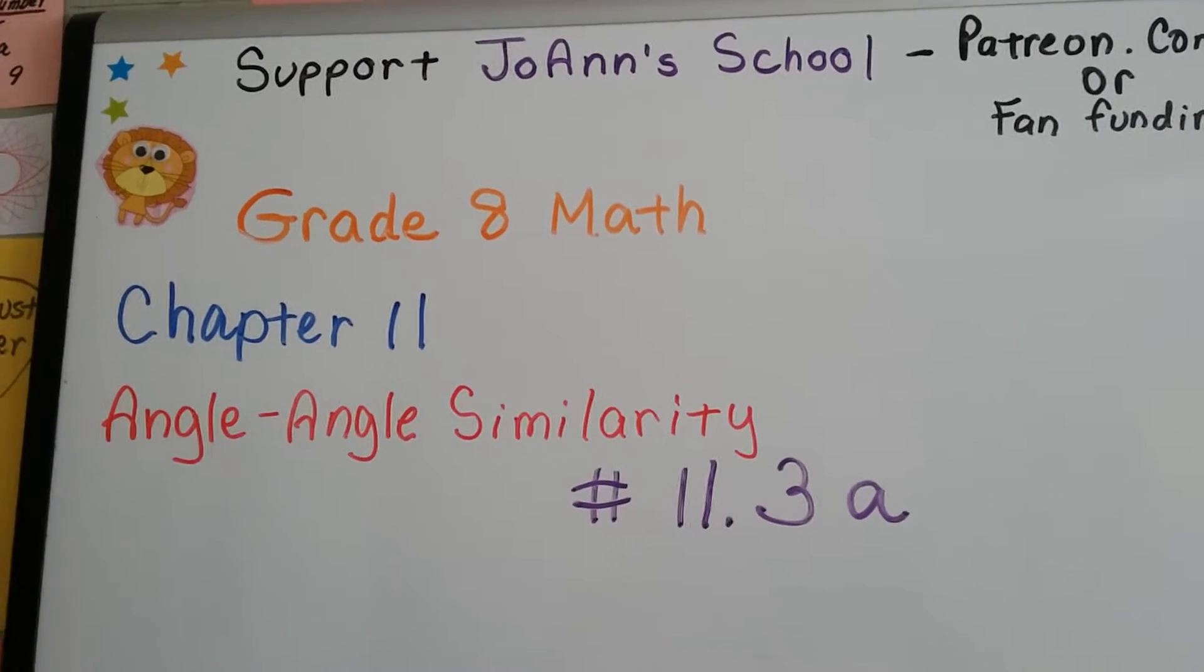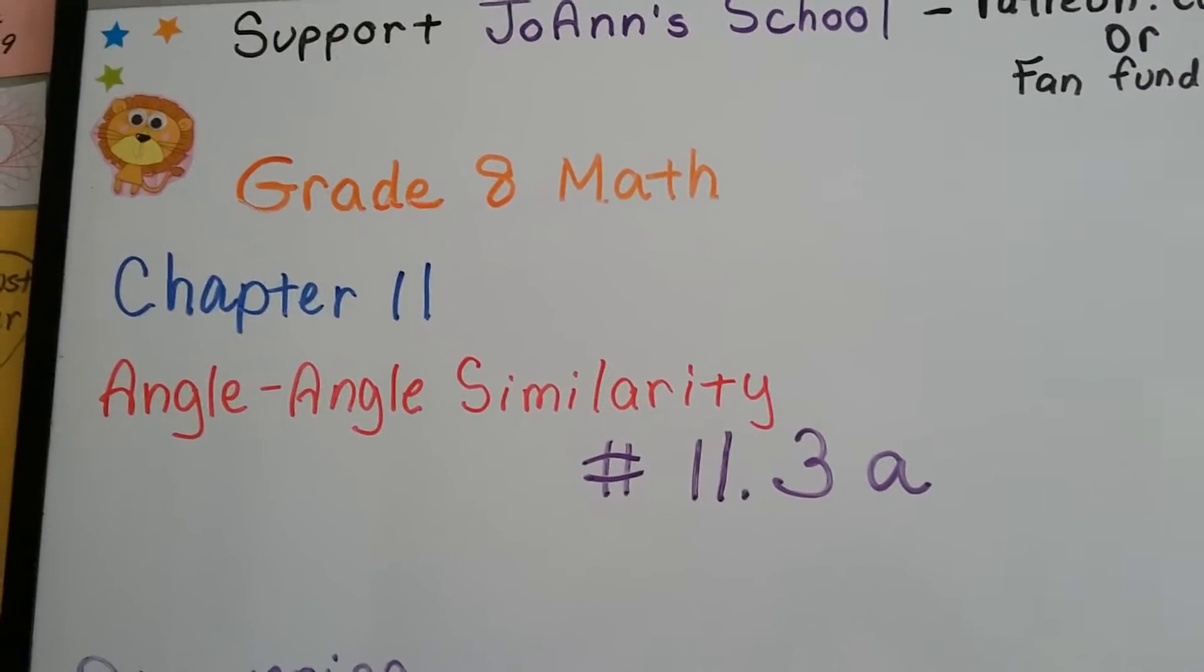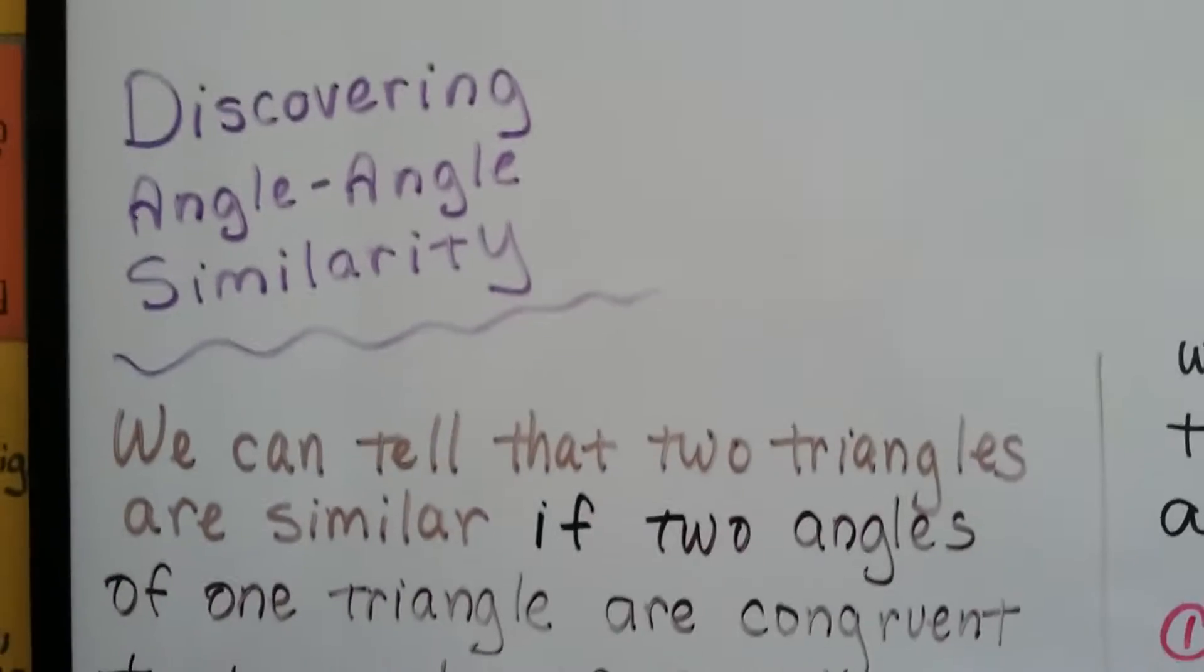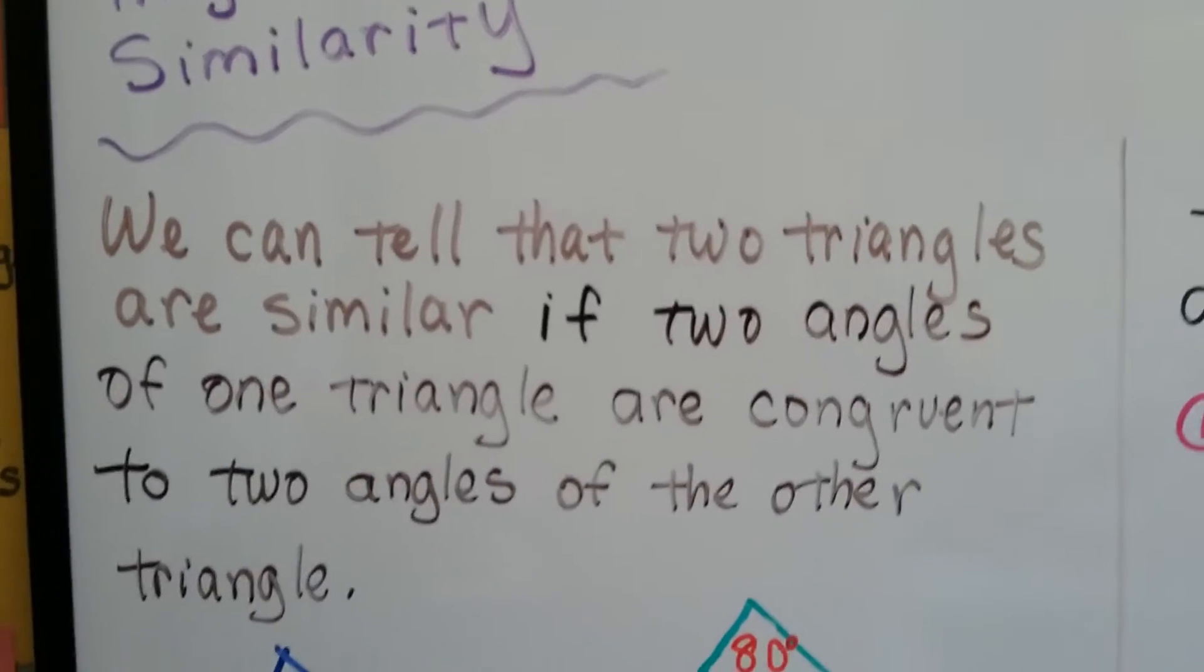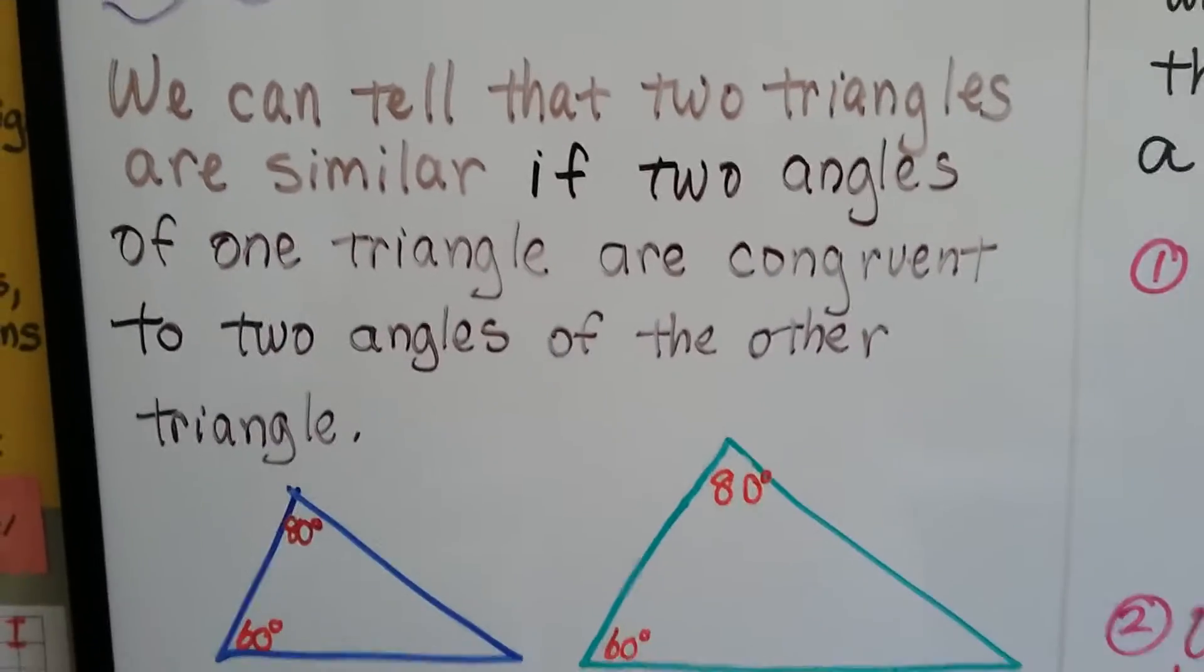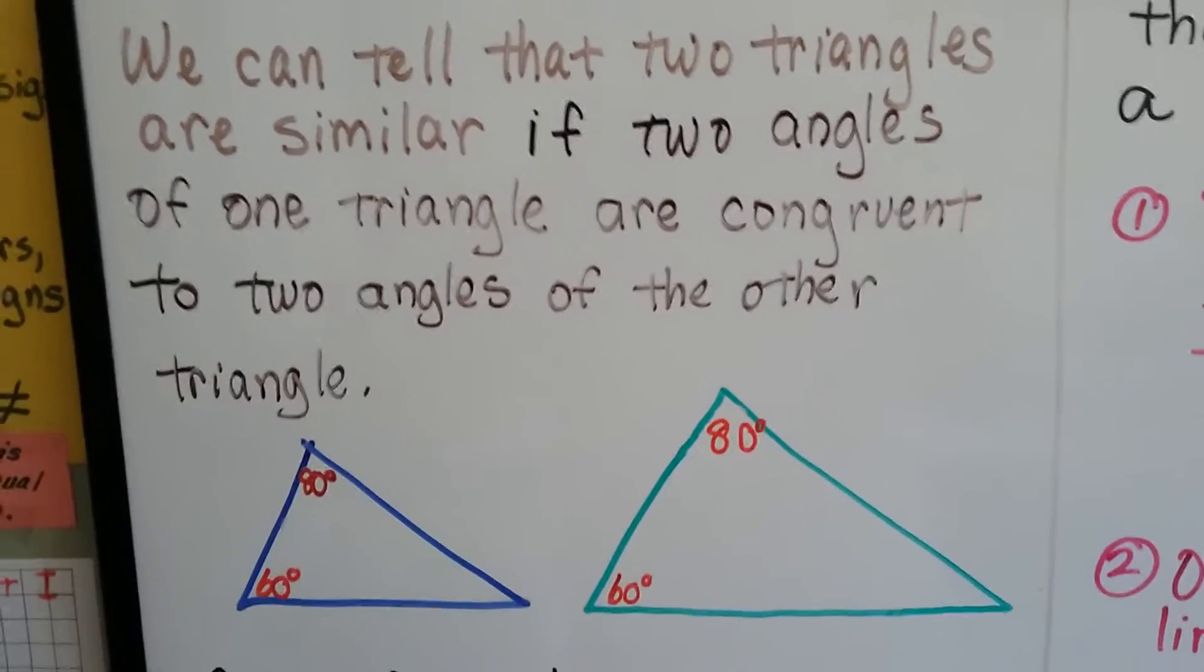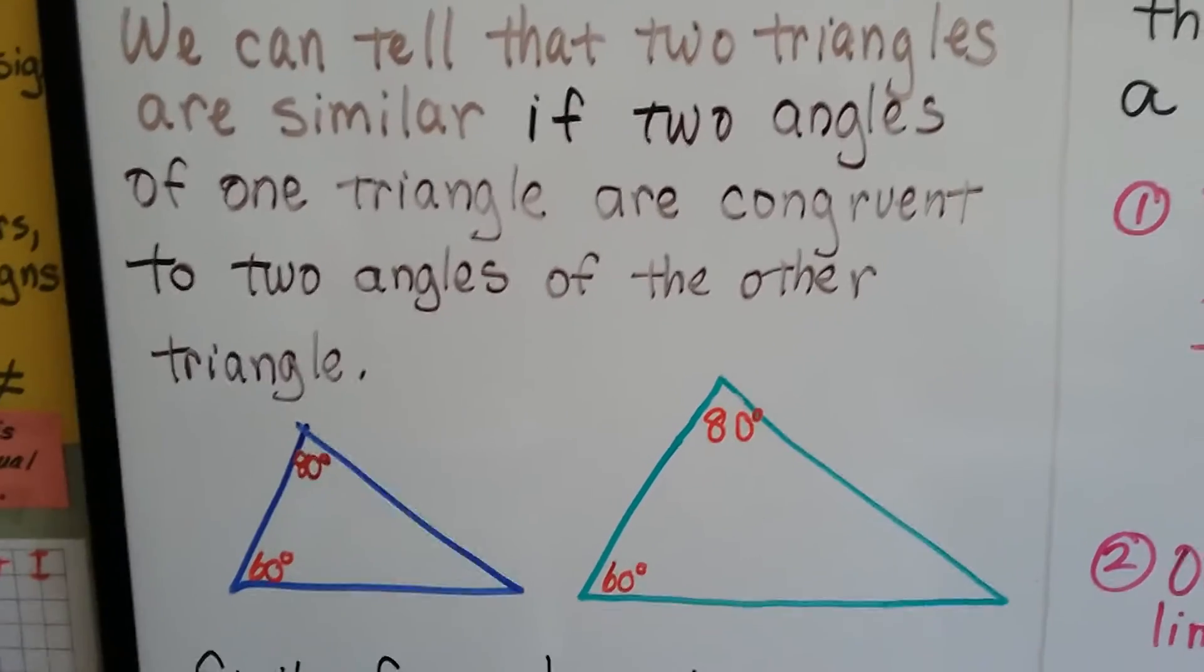Grade 8 math, number 11.3a. We're going to talk about angle-angle similarity and discovering angle-angle similarity. We can tell that two triangles are similar if two angles of one triangle are congruent to two angles of the other triangle.